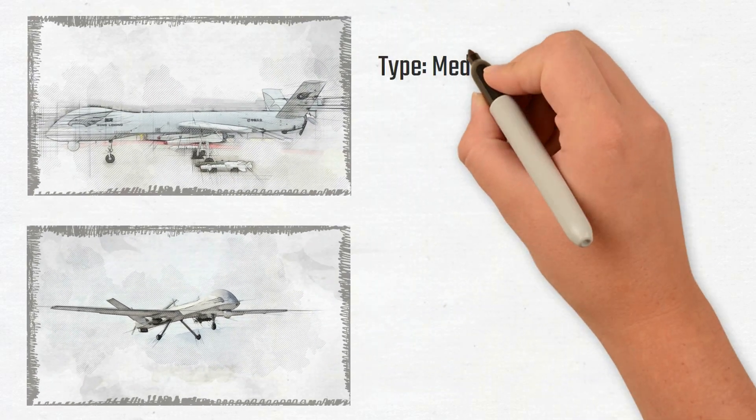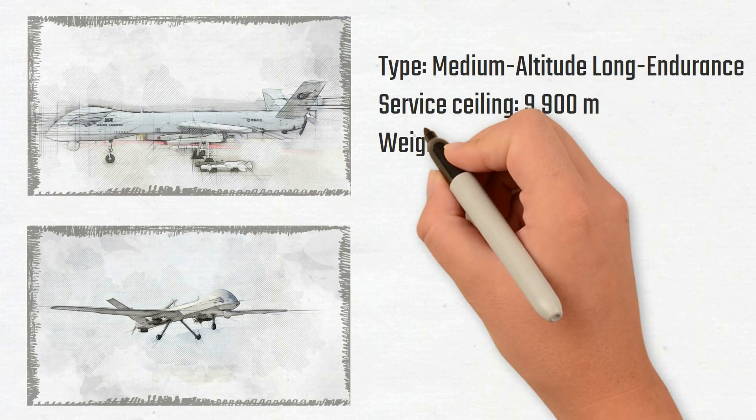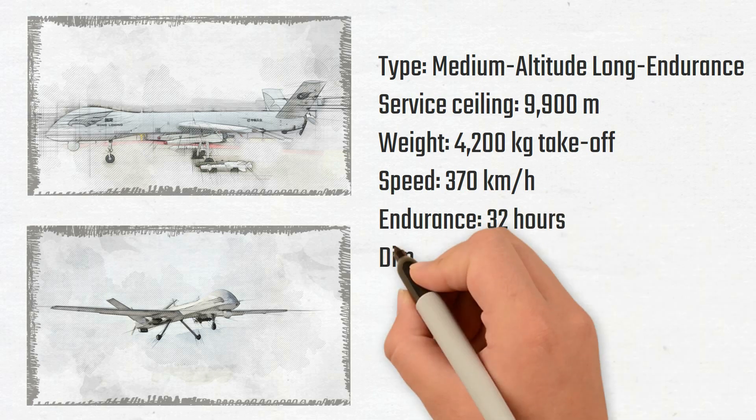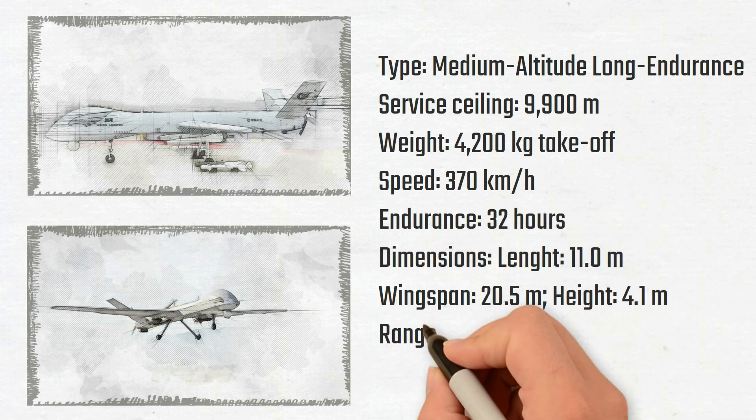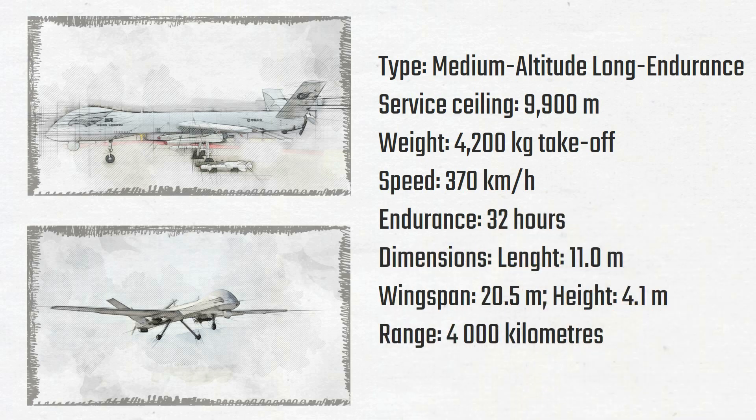Wing Long 2 can launch long-distance attacks using satellite connections. It can fire air-to-air missiles and hold up to 200 kilograms of laser-guided bombs. Its maker claims that its battery life is approximately 32 hours, having a 4,000-kilometer range and a 370-kilometer top speed.